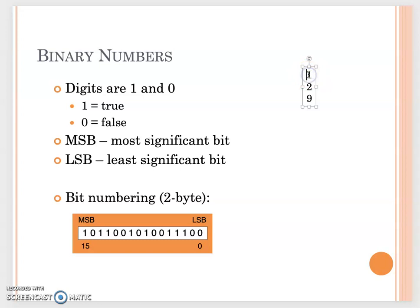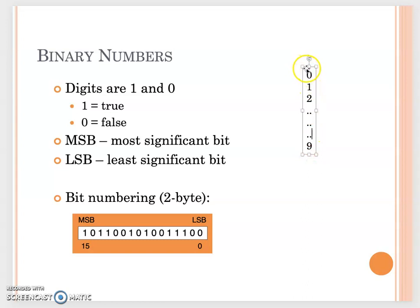In the decimal system, each digit can be 0, 1, 2, 3, 4, up to 9. But in the binary system, each digit can only be 0 or 1. Here we show you what bit numbering looks like. Using 2 bytes as an example, you have 16 bits total, numbered from digit 0 to digit 15. Each digit represents 1 bit.